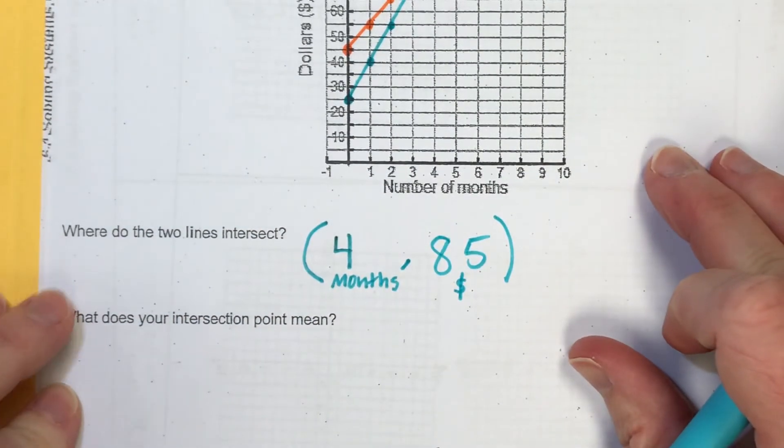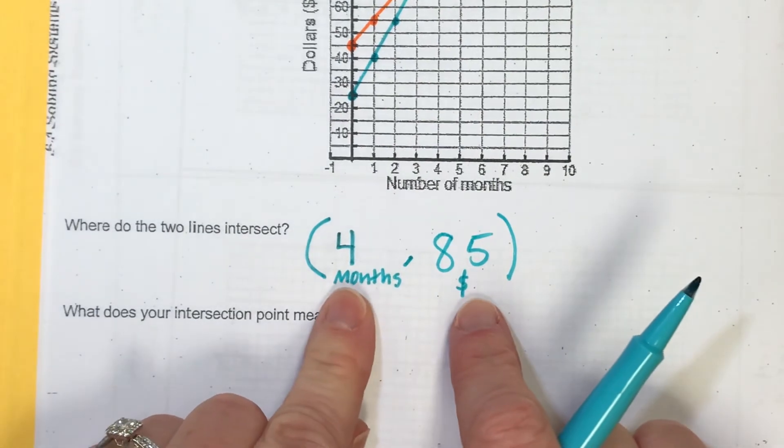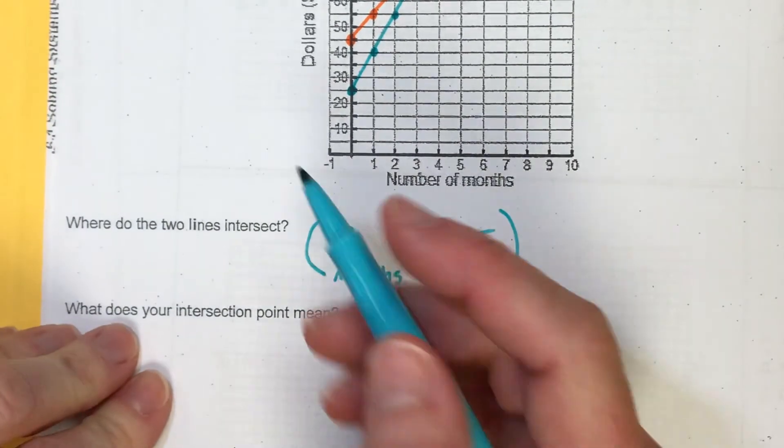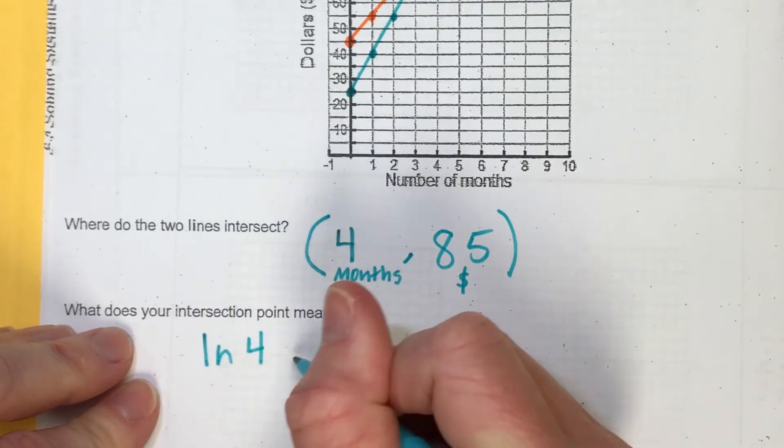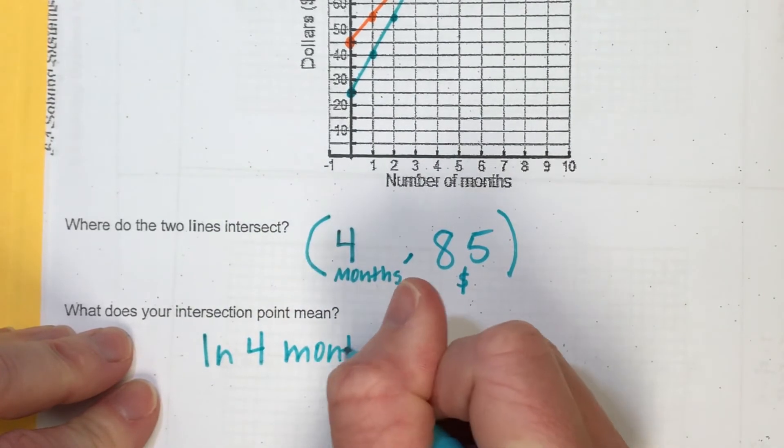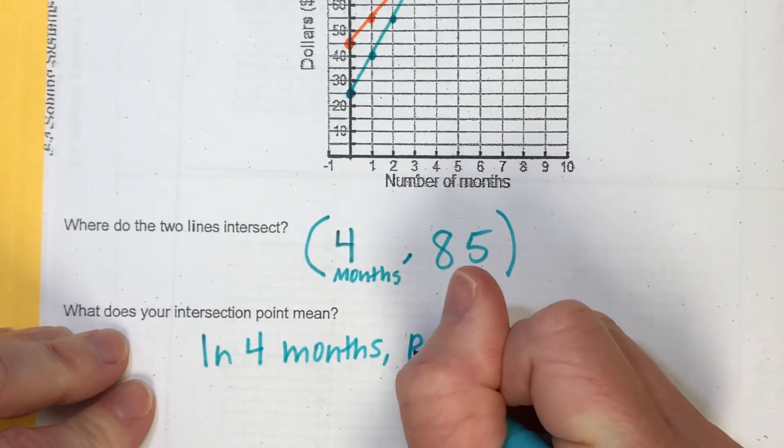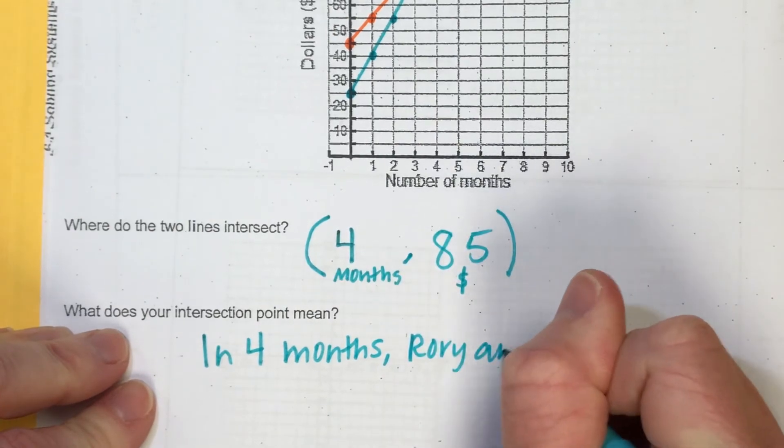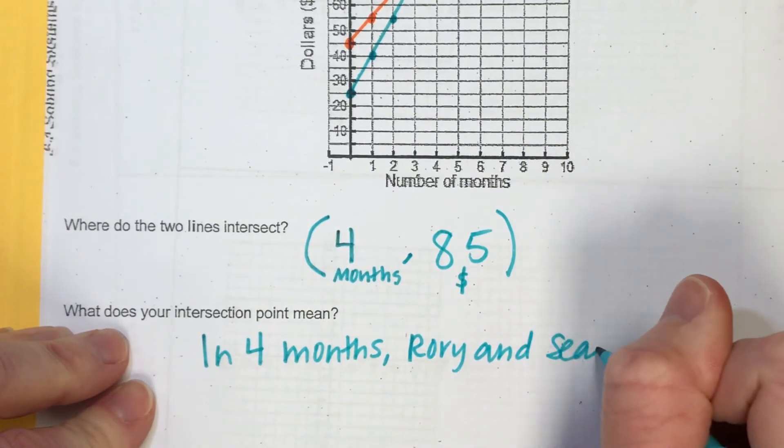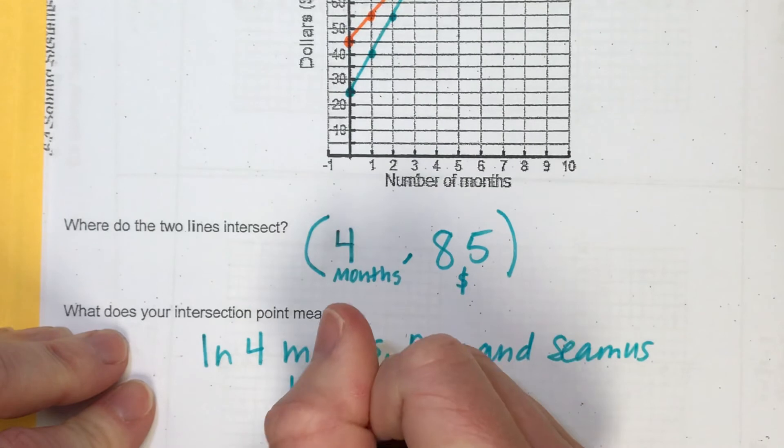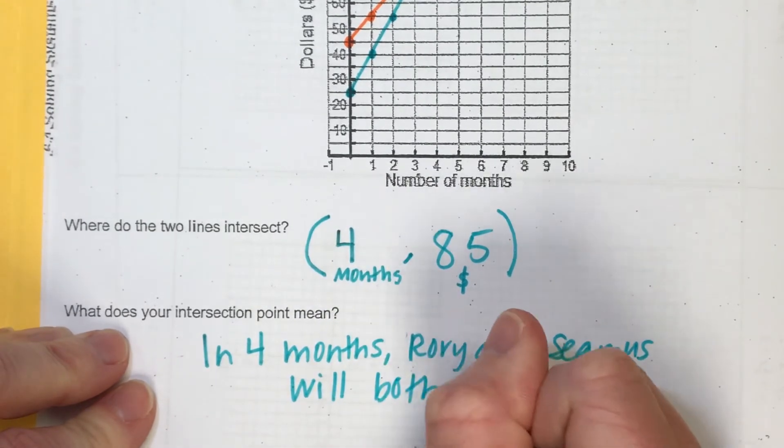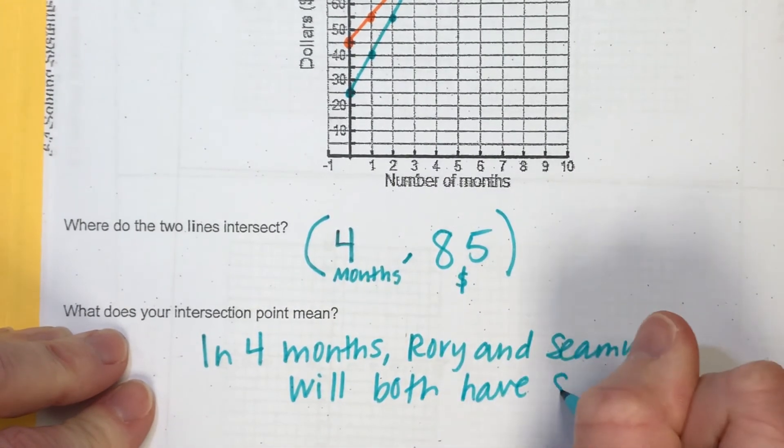What does your intersection point mean? So this is why I wrote down my X comma Y. In four months, Rory and Seamus will both have $85.